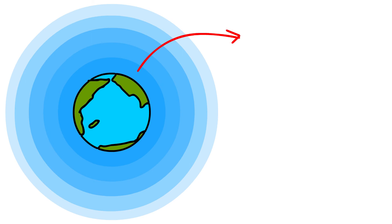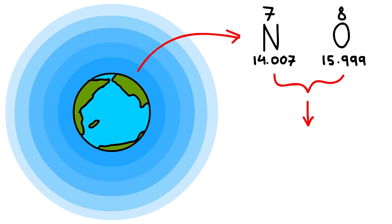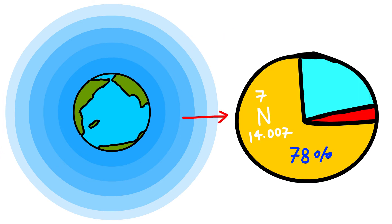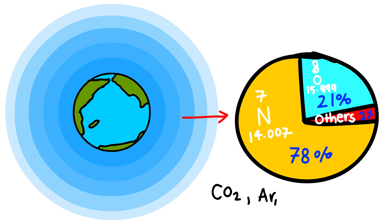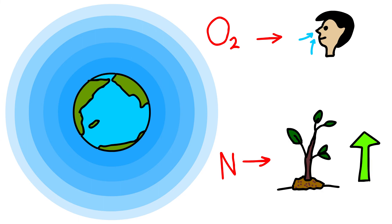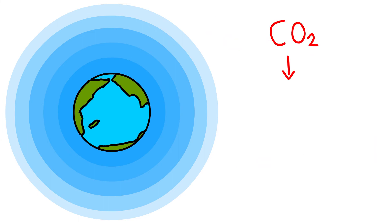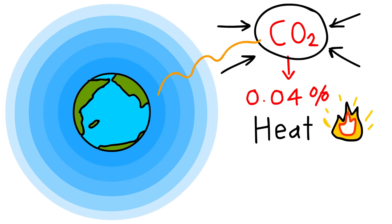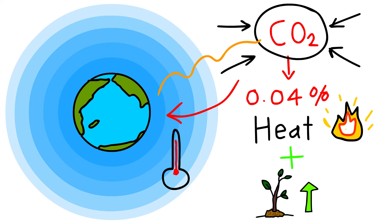The atmosphere is composed mainly of nitrogen and oxygen, which make up about 99% of clean dry air — nitrogen 78%, oxygen 21%, and other gases like carbon dioxide and argon comprise 1% by volume. Oxygen is the breath of life, while nitrogen helps in the growth of living organisms. Carbon dioxide, though present in minute amounts, is important as it absorbs heat radiated by the Earth, thereby keeping the planet warm. It is also essential for the growth of plants.